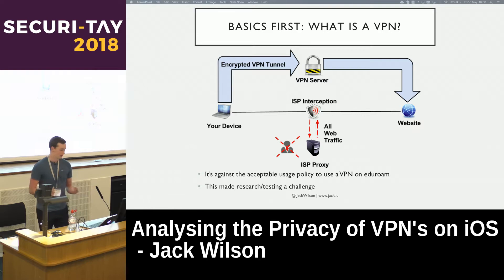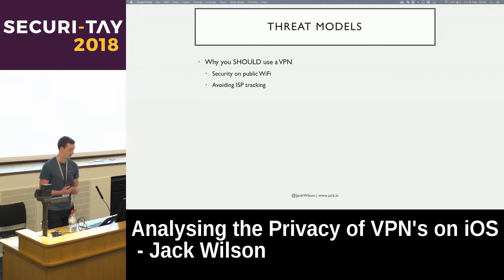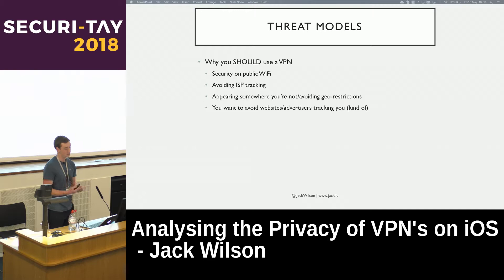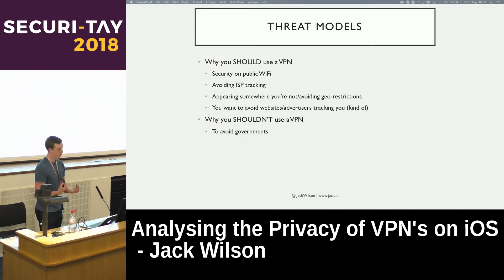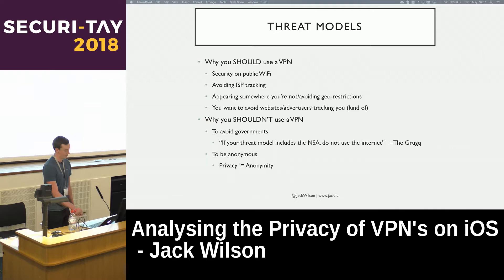If you are going to use a VPN, you need to consider your threat model. You should use a VPN for security on public Wi-Fi, to avoid your ISP tracking you, or for appearing somewhere you're not to avoid geo-restrictions. You can use it to avoid websites tracking you by IP, though that's less relevant now with cookies. You definitely shouldn't use a VPN to avoid governments — every time leaks happen we get more surprised at their surveillance capabilities. And you definitely shouldn't use it to be anonymous: privacy is not the same as anonymity.